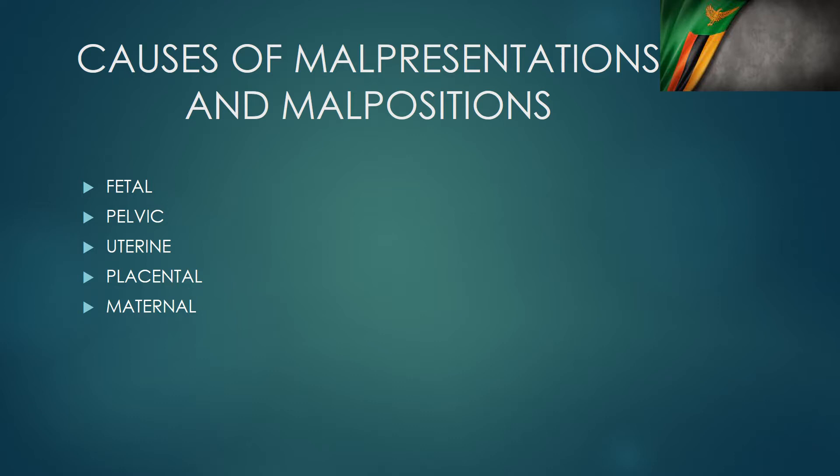We might also have placental causes and amniotic fluid causes. With placental causes, you might have a low-lying placenta — it is not unusual to see a malpresentation in a case of placenta previa, because the placenta lying in the lower uterine segment reduces the space in the lower pole of the uterus, resulting in a malpresentation.